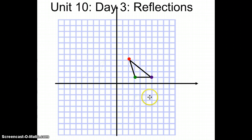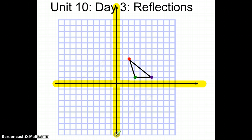So if you have a shape — we have a triangle here — and I want to reflect this triangle, in order to reflect anything I need to make sure I have a line of reflection. In middle school, the types of lines of reflection you used were either the x-axis or the y-axis. So if I want to reflect this shape around the y-axis, I'm basically going to flip this shape over as if the y-axis is the mirror.